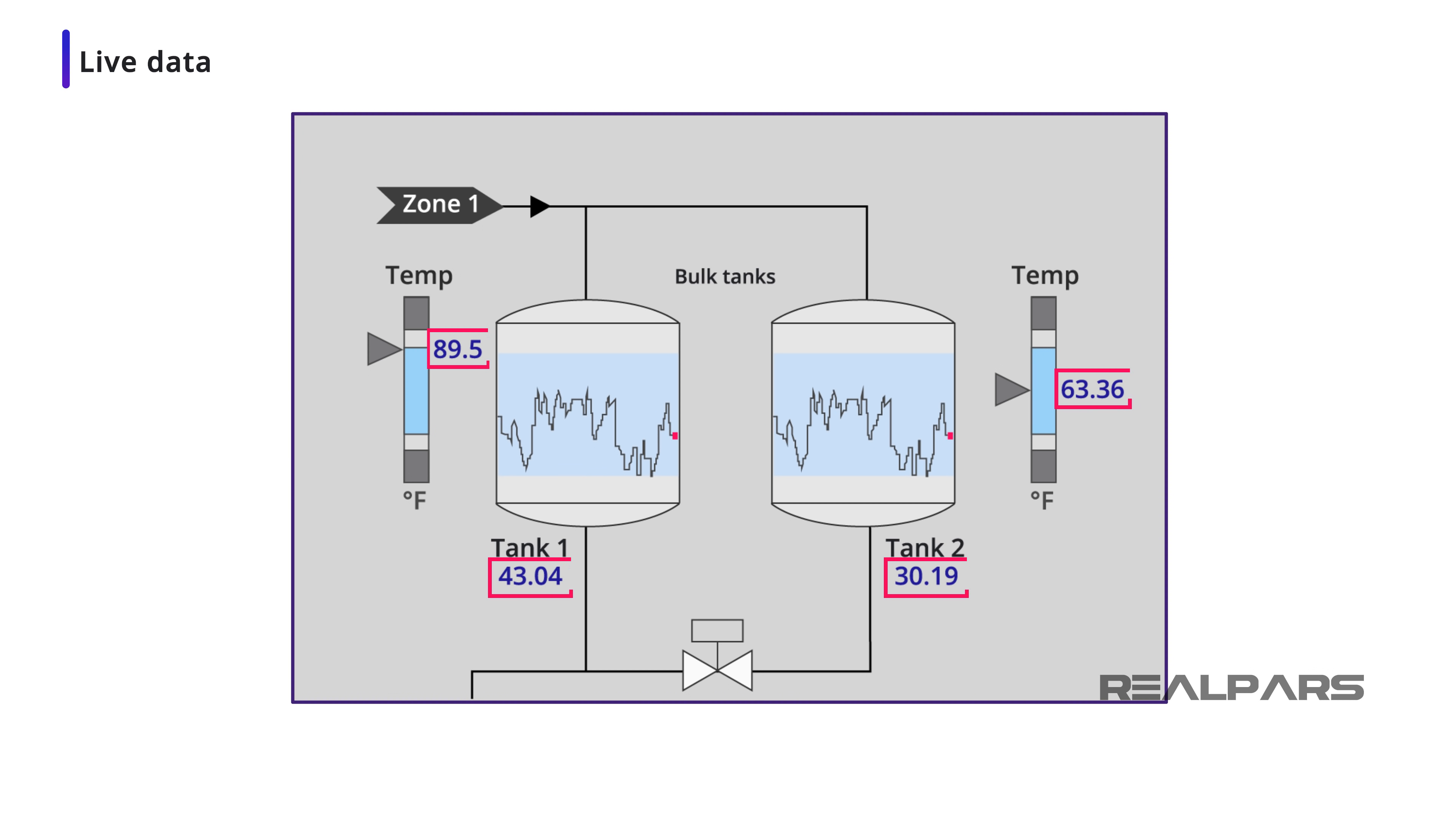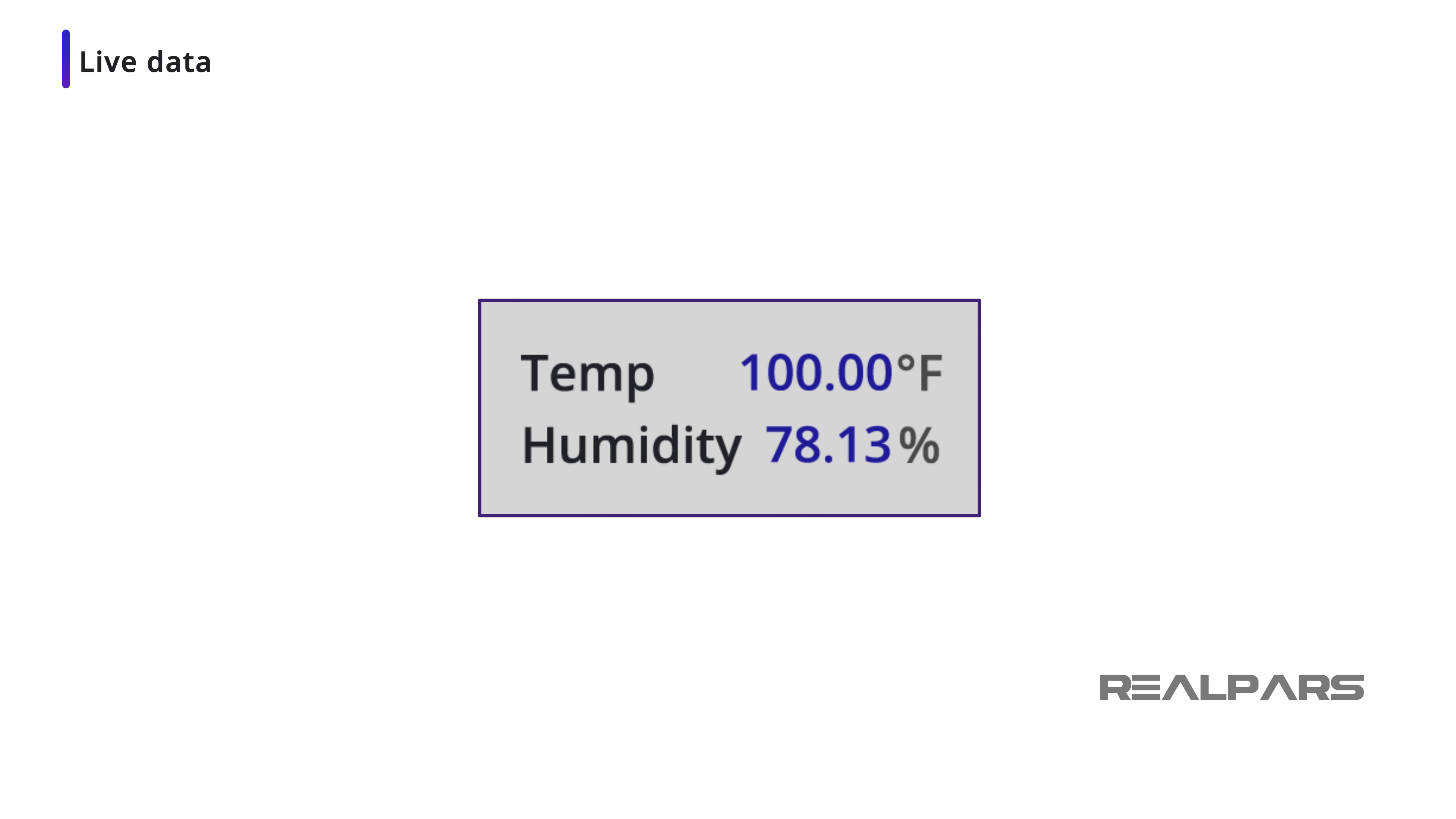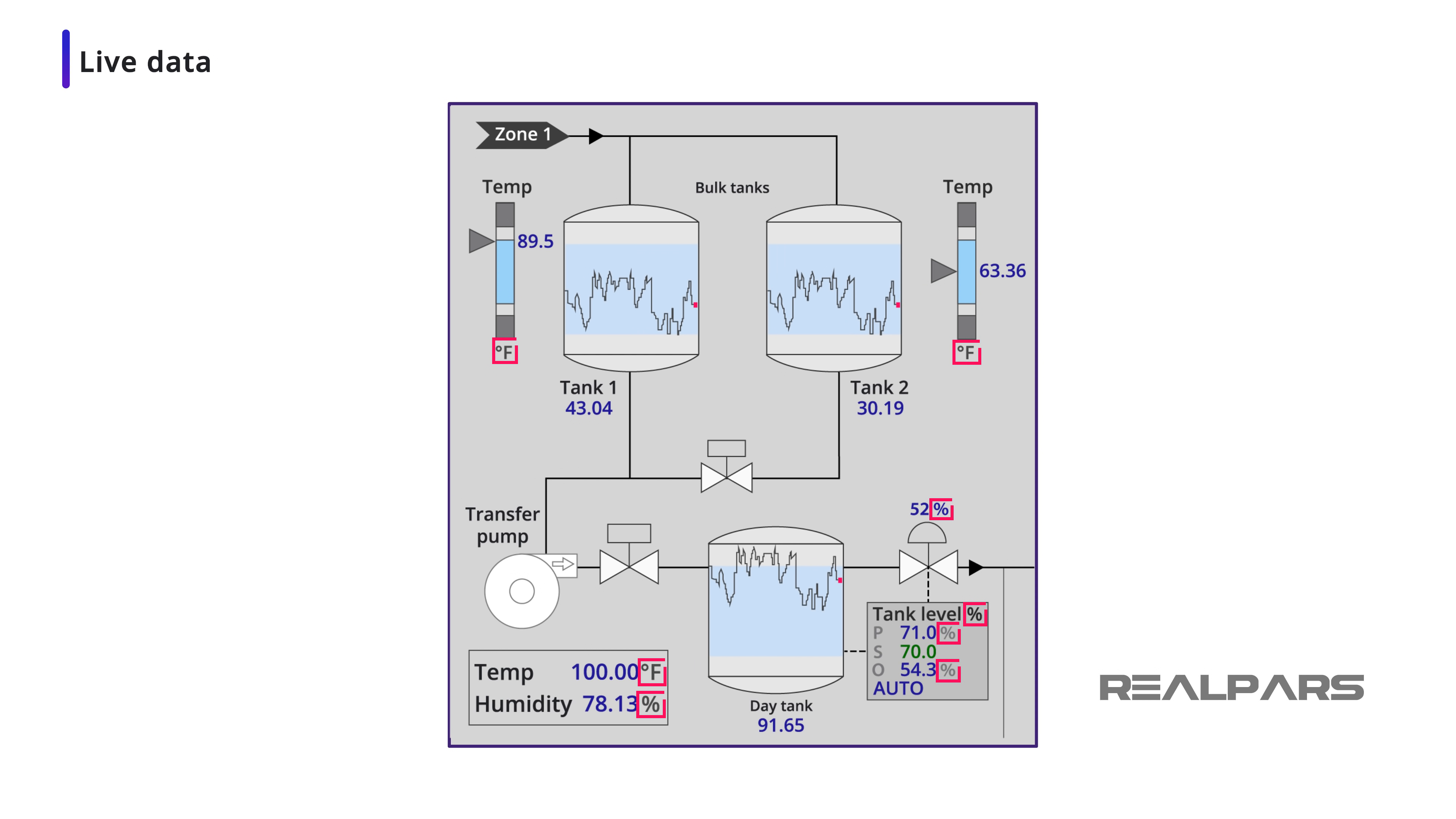Live data should be depicted differently than static text. The use of a bold dark blue for live data is a good choice against the gray background, and the dark gray static text. If live data is shown in a table, align the numbers on the decimal point, and do not display leading zeros. When required, the units of measurement are displayed in lower contrast and adjacent to the live data value.